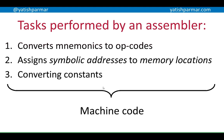You can also have a process called cross-compilation, where you have a translator — an assembler — running on, say, an Intel x86 platform, and it creates machine code that will run on a different processor, like a Motorola processor. There are software tools that can do that. And for those who noticed: translators are software.